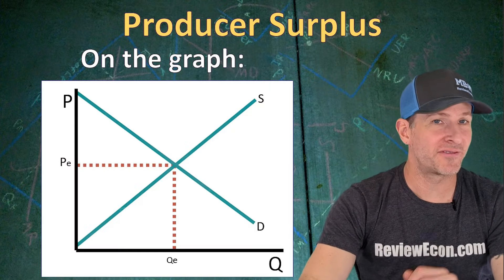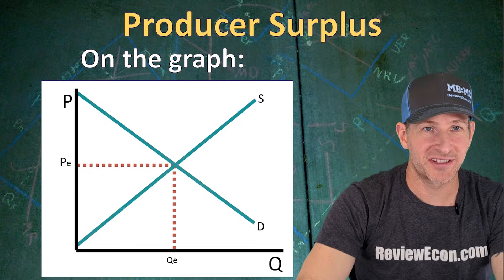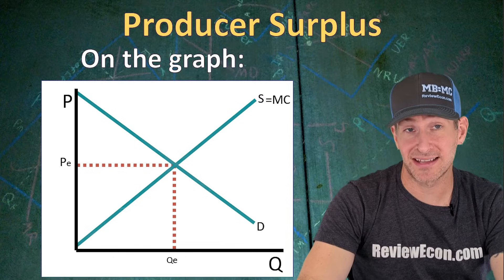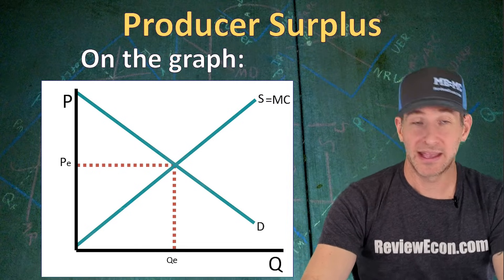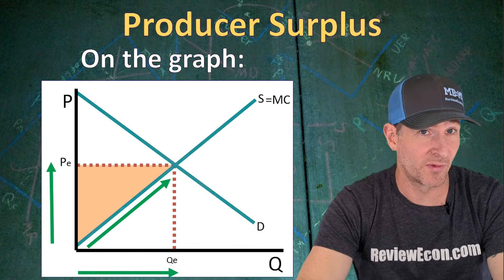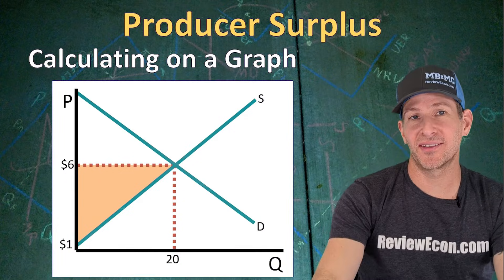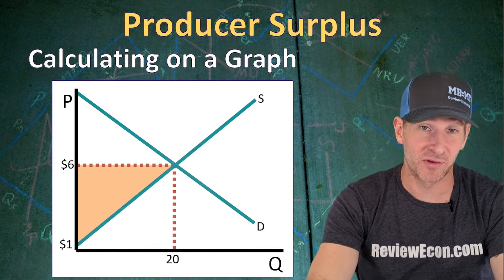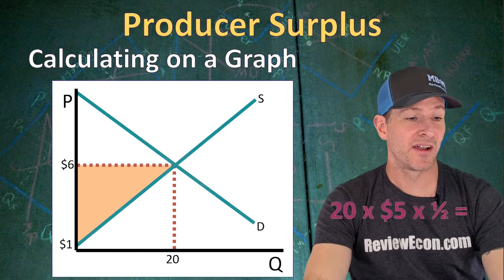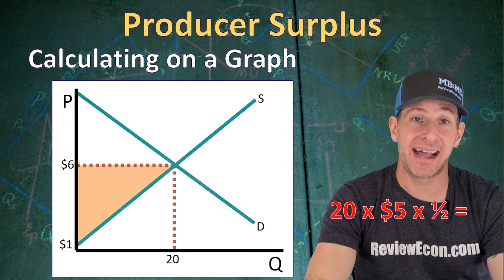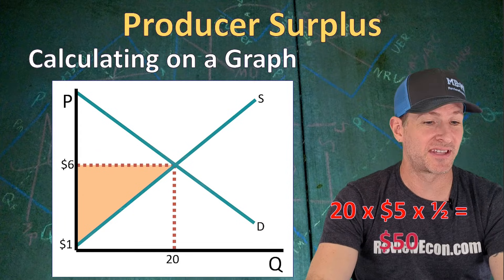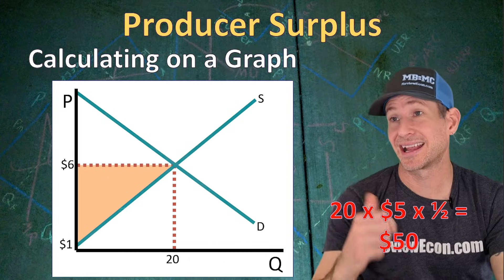Going back to the graph, we can find producer surplus as well. The supply curve is the marginal cost curve, and if we take the difference between the price and the marginal cost for each unit produced, it gives us a triangle of producer surplus at the equilibrium price for the equilibrium quantity. With numbers on the graph, we calculate the area: base of 20 units times height of $5 ($6 minus $1) times one-half equals $50 of producer surplus in this market.